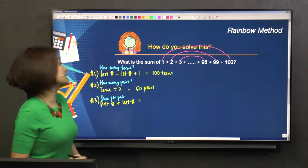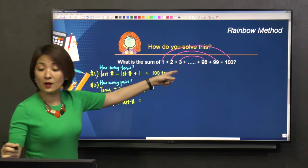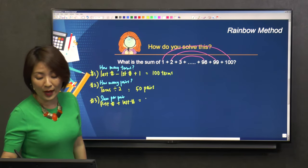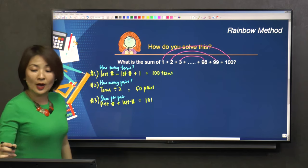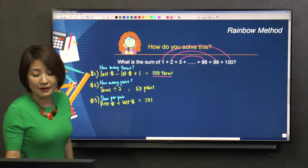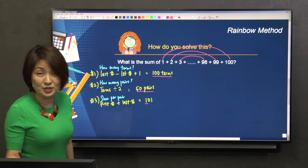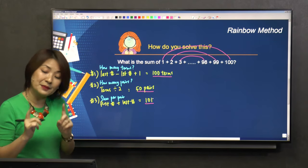What's the first number? 1. The last number? 100. So I'll have 101. So I have this information: 100 terms, 50 pairs, 101 sum per pair.